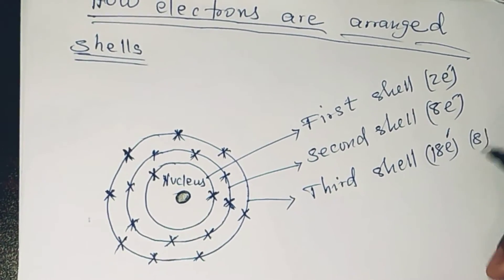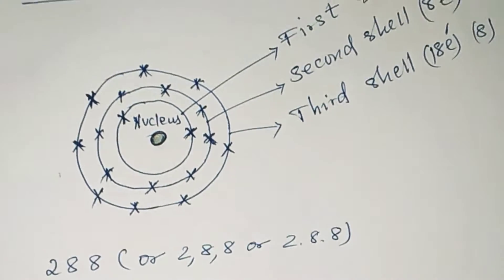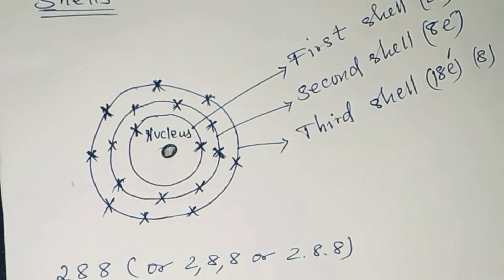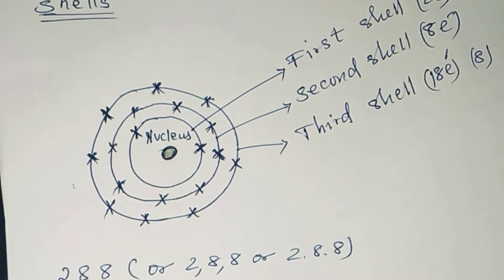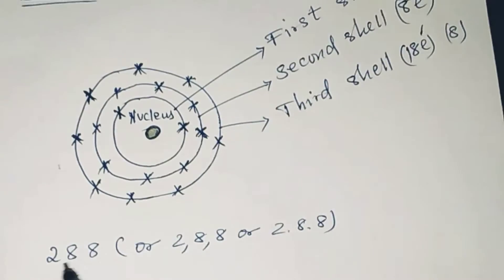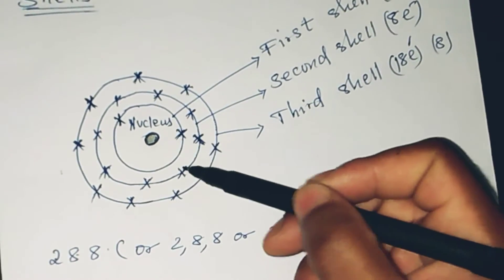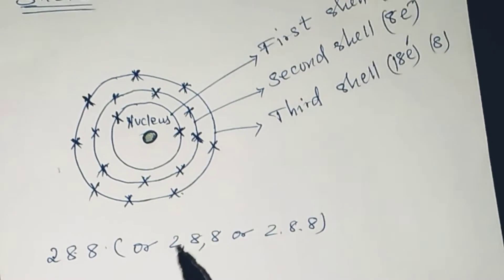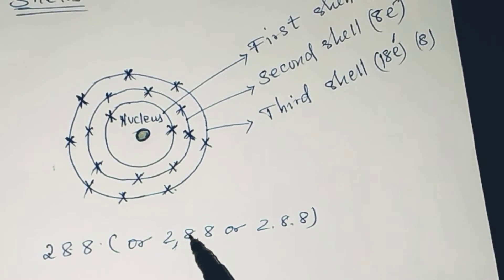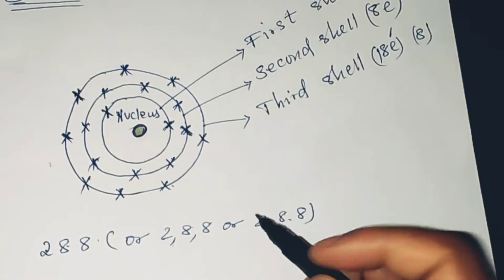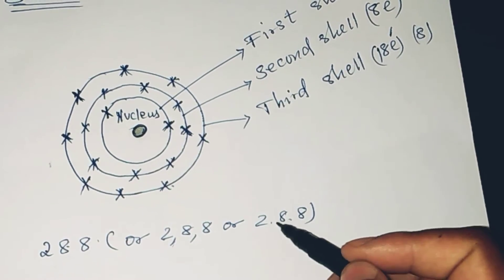They are shown in this way: you can show them as 2-8-8, which is two electrons, eight, eight; or you can show them as 2,8,8; or you can show them as 2.8.8.